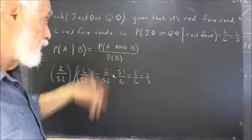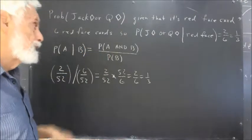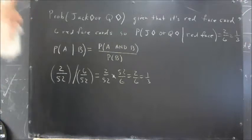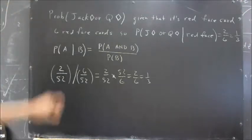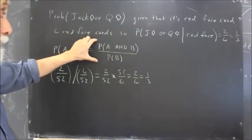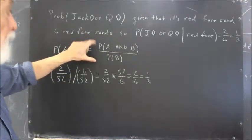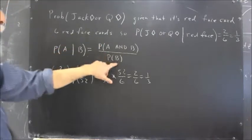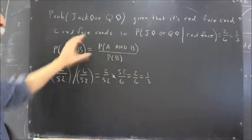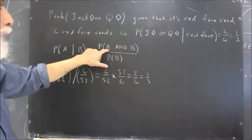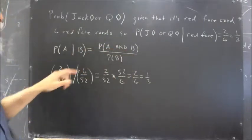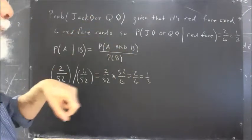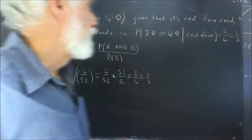We'll see next time why that is — we didn't have time to get as deeply into it as I hoped, but we'll pick up on it shortly. So the probability of A and B divided by the probability of B. What's the probability of A and B here? A is Jack or Queen of Diamonds; B is red face card.